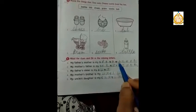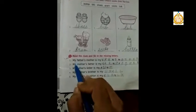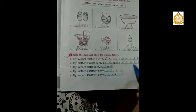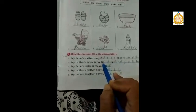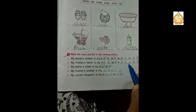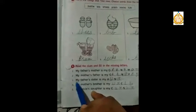Second question: My mother's father is my grandfather. Spelling of grandfather is G-R-A-N-D-F-A-T-H-E-R. Next question: My father's sister is my aunt. Spelling of aunt is A-U-N-T.